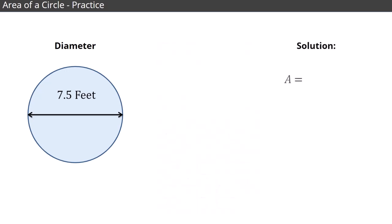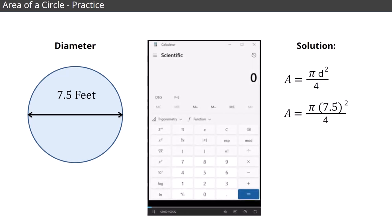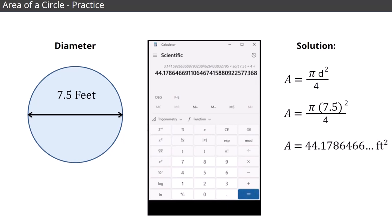We started by writing the formula for finding the area of the circle using its diameter. Then, we replaced d with 7.5. To execute this calculation, we use the pi key on our calculator, multiply that times 7.5, squared, then divide by 4. Then, we rounded our final answer to the hundredths, and attached the appropriate units, which in this case is square feet.